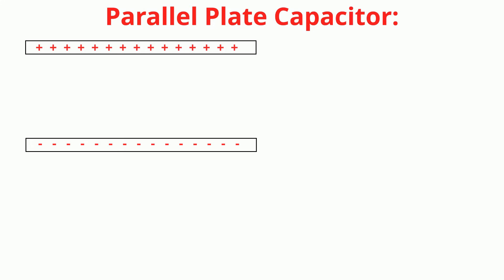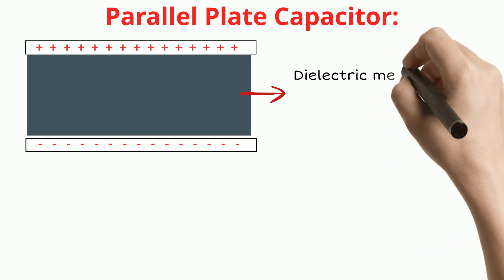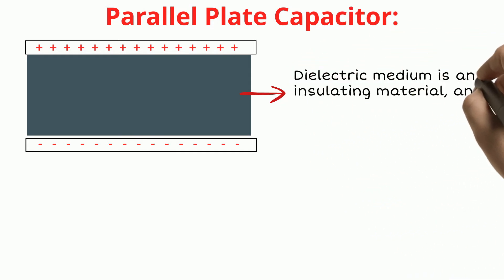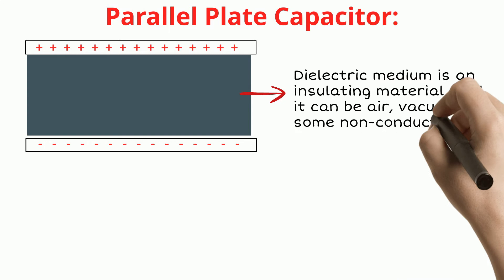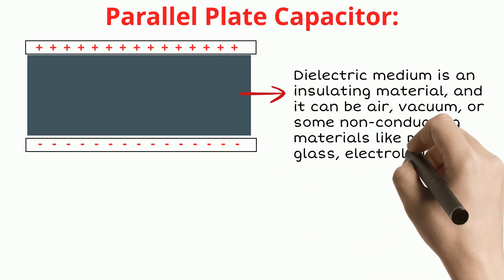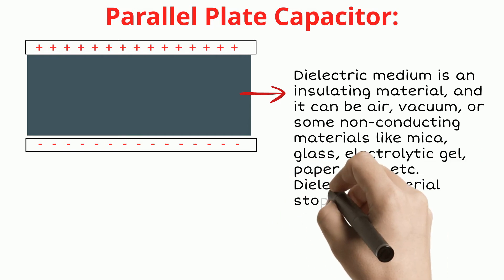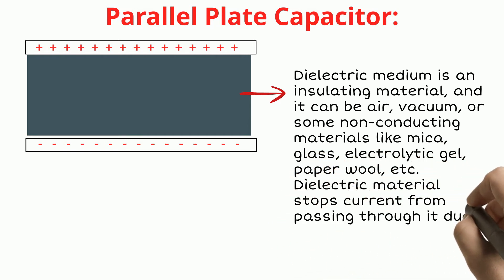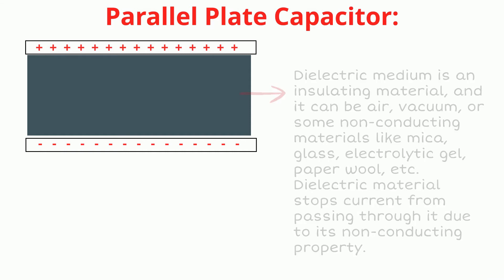A dielectric medium fills the gap between the two plates. The dielectric medium is an insulating material — it can be air, vacuum, or some non-conducting material like mica, glass, electrolytic gel, paper wool, etc. Dielectric material stops current from passing through it due to its non-conducting property.